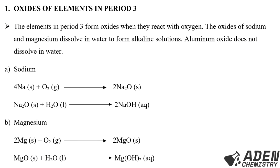The elements in Period 3 form oxides when they react with oxygen. The oxides of sodium and magnesium dissolve in water to form alkaline solutions, and aluminium oxide does not dissolve in water. Let us go to sodium and see the questions for the reaction that will occur when sodium reacts with oxygen, and when the product formed is dissolved in water.